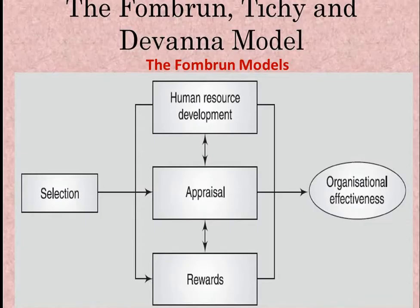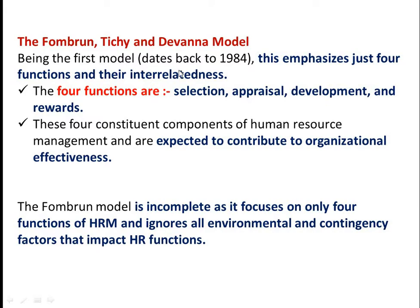The first model is the Form Model. It covers the four basic functions of HRM, which are selection, human resource development, appraisal, and reward. These four functions are interrelated to each other, and this interrelatedness gives organizational effectiveness. This model emphasizes just four functions and their interrelatedness: selection, appraisal, development, and reward.